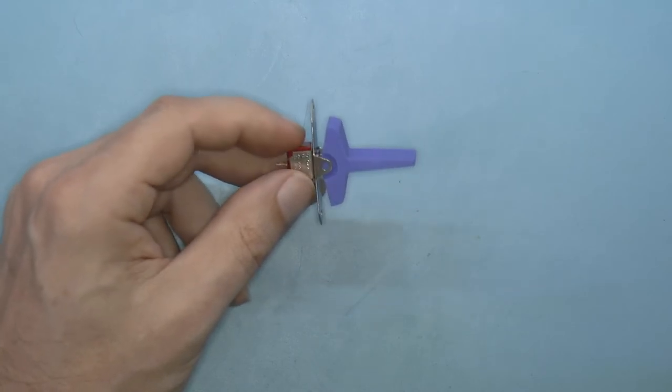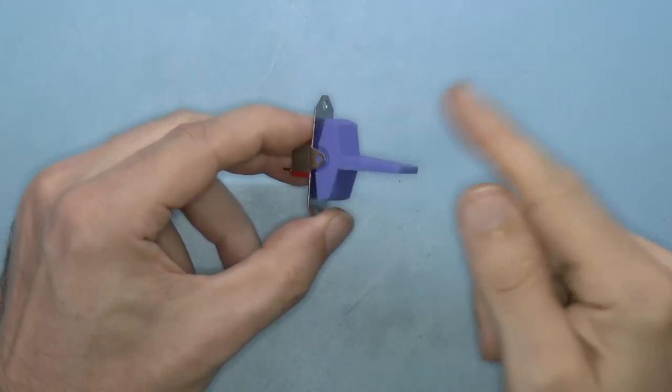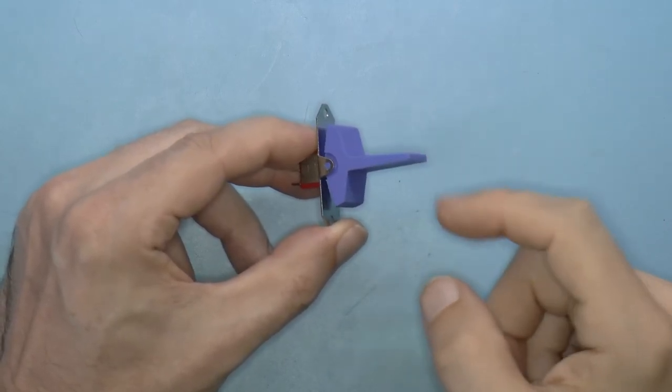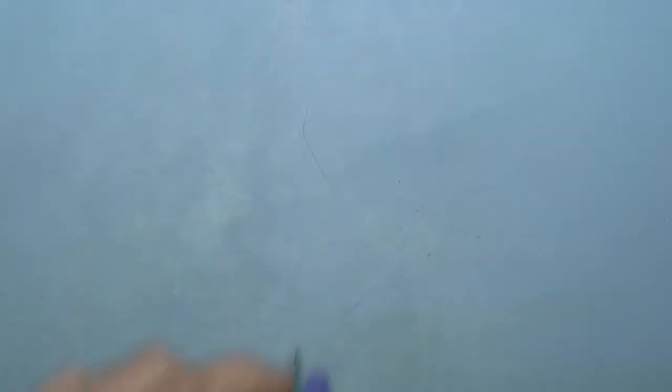I have this retro-looking switch that I can use as a single-step run switch. Flipping it up will stop the CPU, and flipping it up again each time will single-step it. Flipping it down will let the CPU run. Quick, to the state machine!